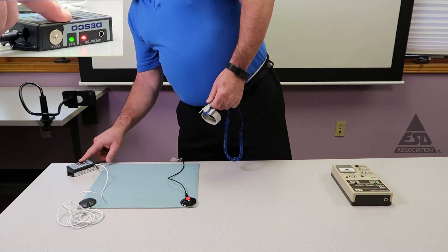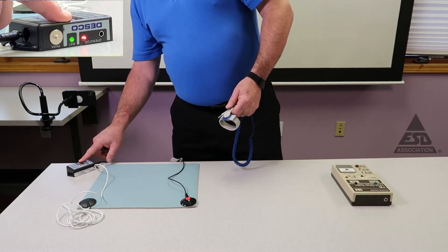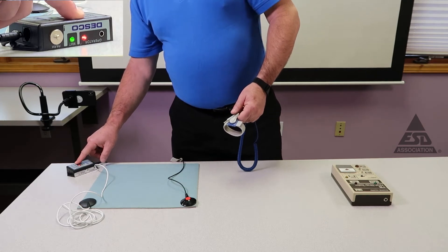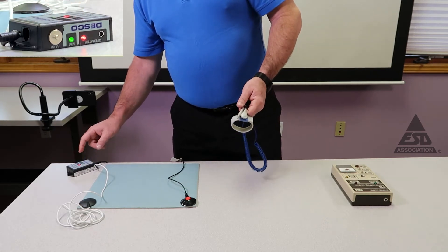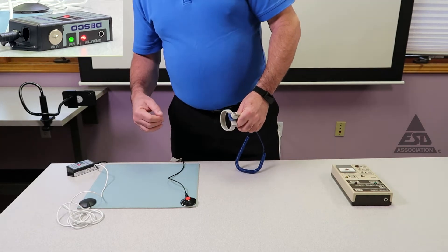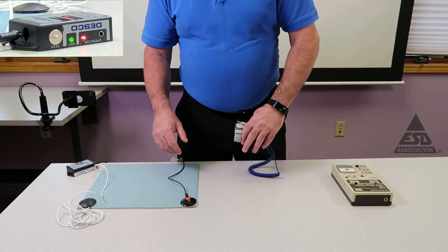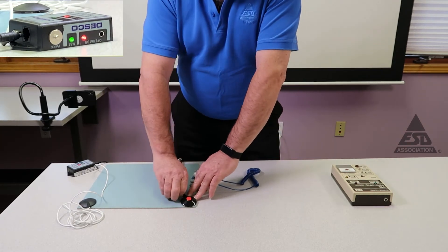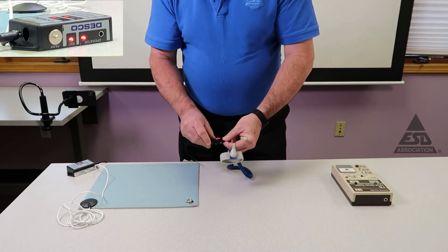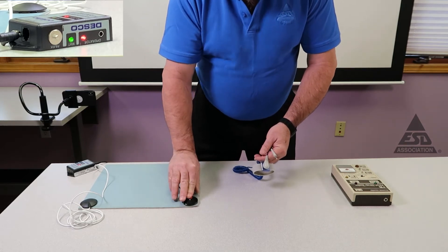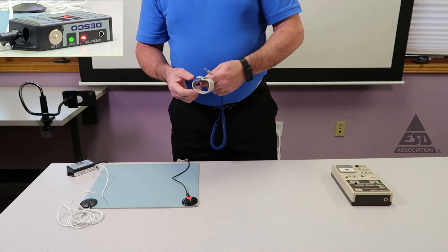The first light, the green light, will monitor your mat connection to ground. Your second one is your operator. First let's demonstrate that the mat will actually monitor the ground. I'll disconnect it like I did the other one and it should alarm. And as you see, it will alarm.